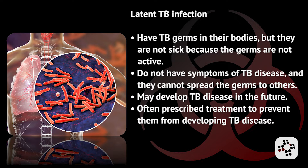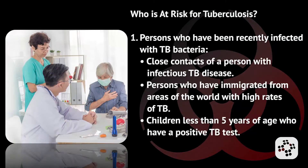Persons with latent TB infection are often prescribed treatment to prevent them from developing TB. Secondly, TB disease is when they're sick from TB germs that are active, meaning they are multiplying and destroying tissue in their body. They usually have symptoms of tuberculosis disease, and people with TB disease of the lungs or throat are capable of spreading germs to others.